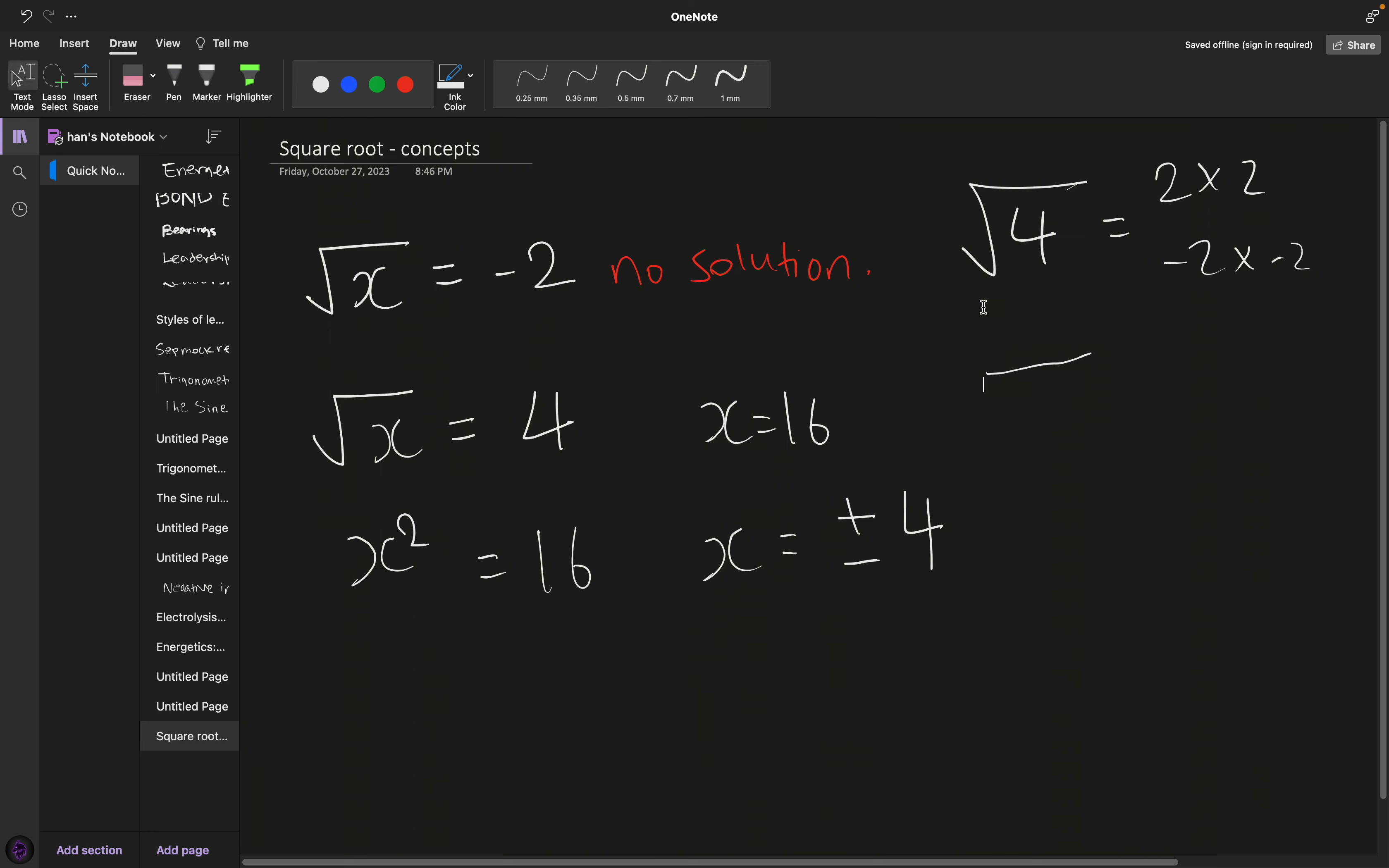There is no way to get negative 2 as your answer by multiplying two numbers. If you multiply two negatives, you always get a positive. And if you multiply two positives, you also get a positive.